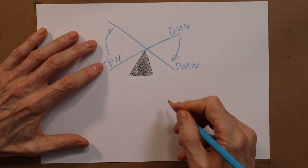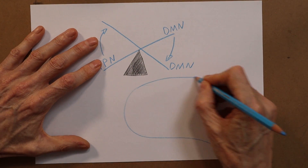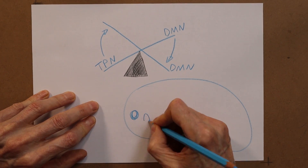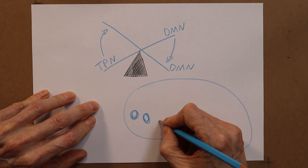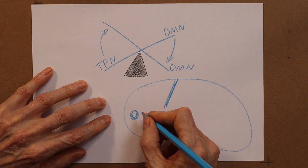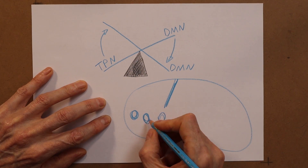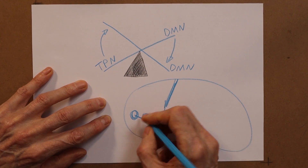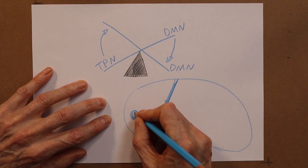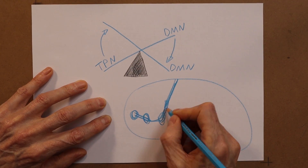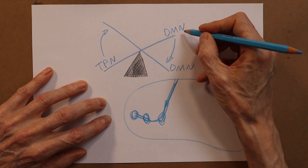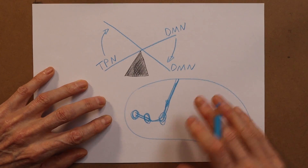In the next video I'll show you how scans have identified the structures of the task positive network. There are meditation and brain training exercises you can do to string these together in a kind of brain training circuit gym — to activate, exercise, and strengthen these components to counteract your anxiety.